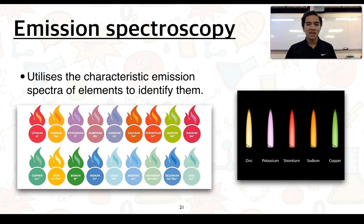I've already discussed that flame colours could be used as a means of determining the presence of elements but we know this is quite limited because certain elements can give off quite similar colours. So emission spectroscopy utilizes the characteristic emission spectra of elements as a means of identifying them instead of just based on their colour.